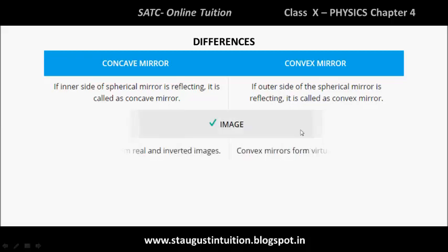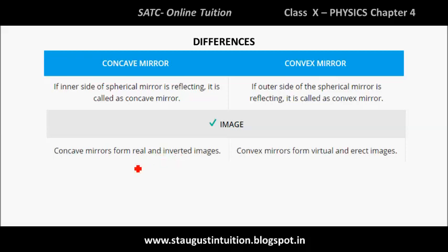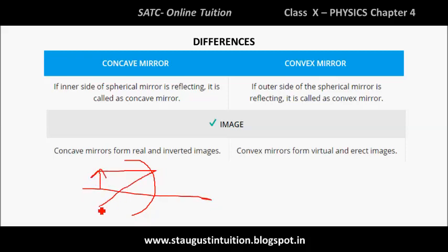Regarding image formation: the concave mirror forms a real and inverted image. For example, if we place an object in front of a concave mirror, the reflected rays produce a real image. In contrast, for a convex mirror, the image formed is virtual.